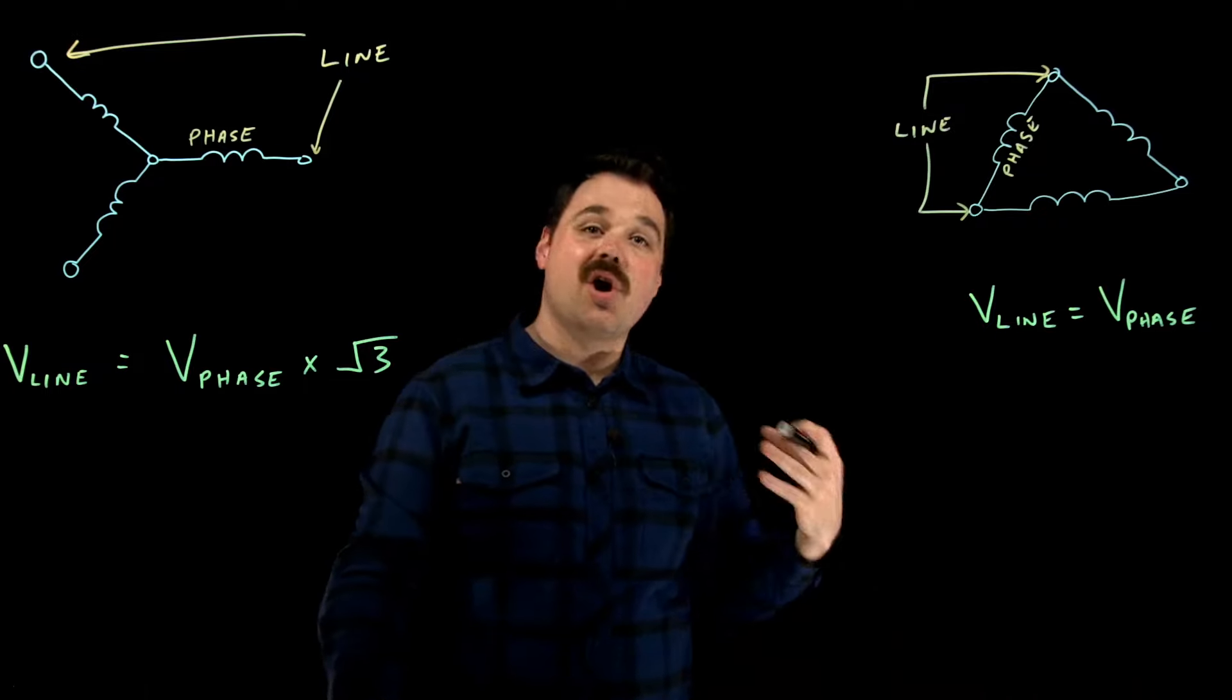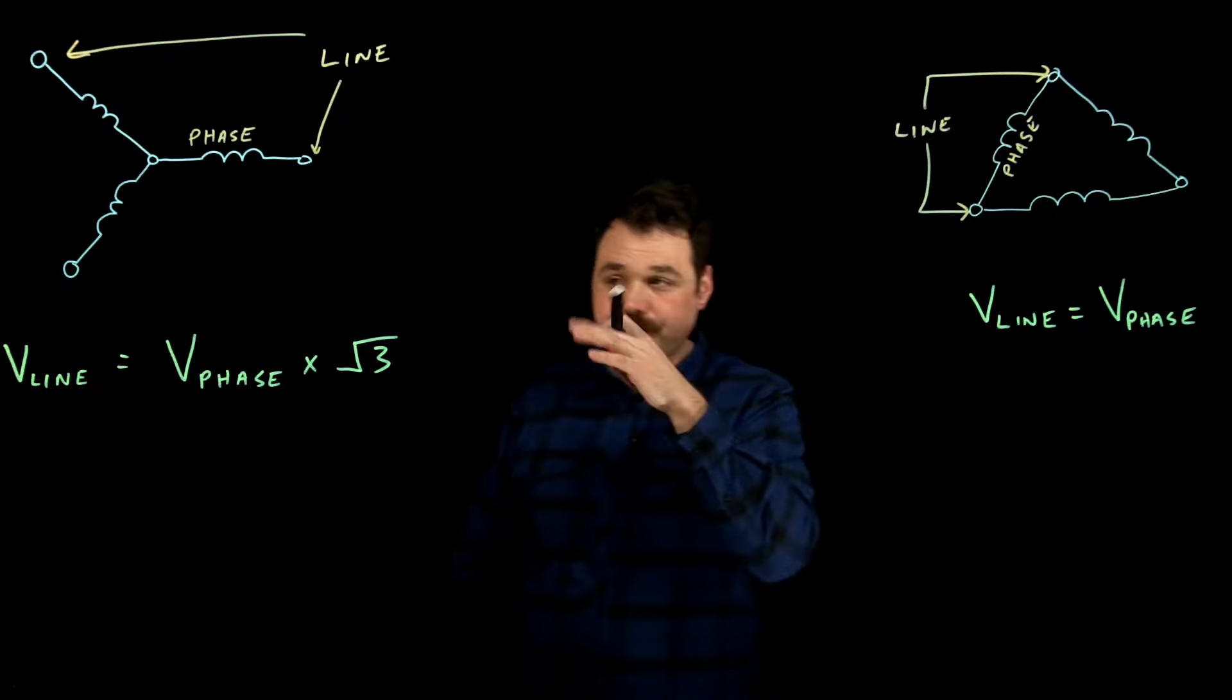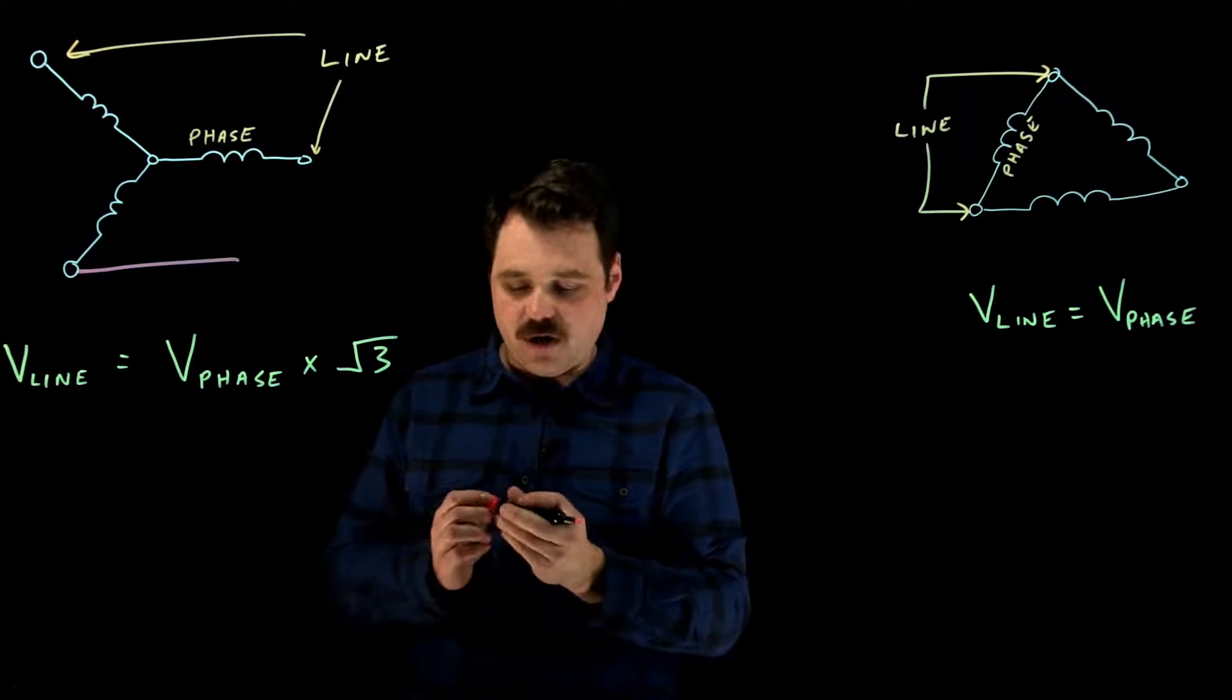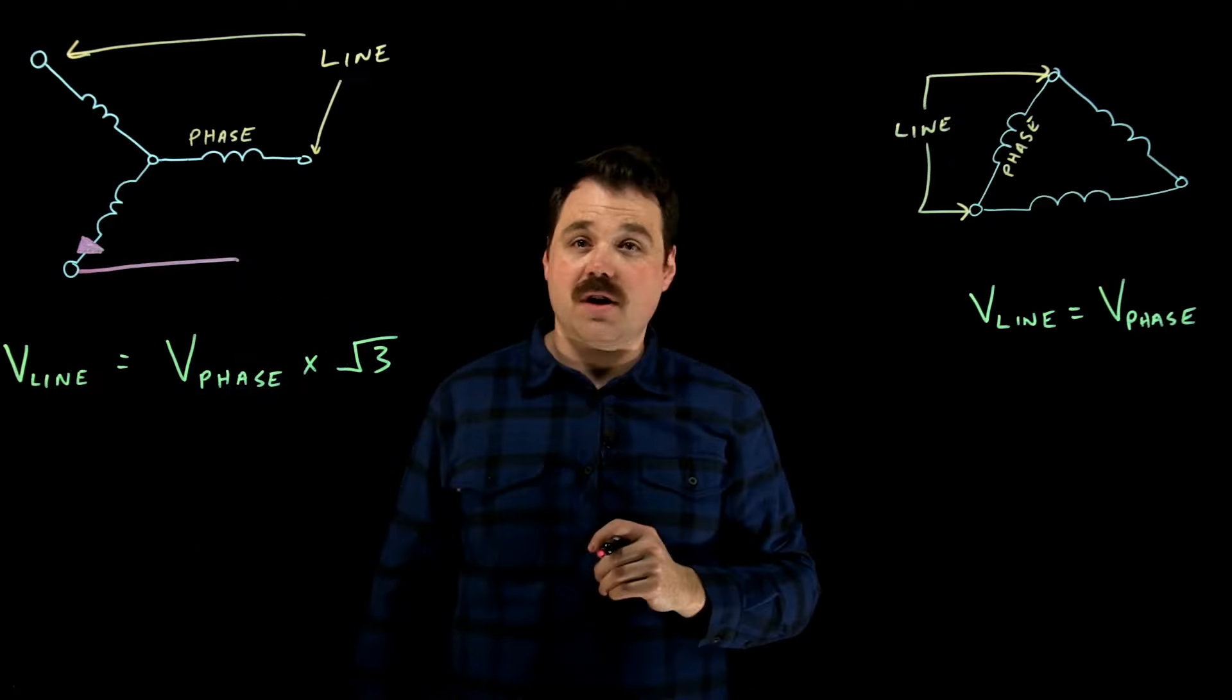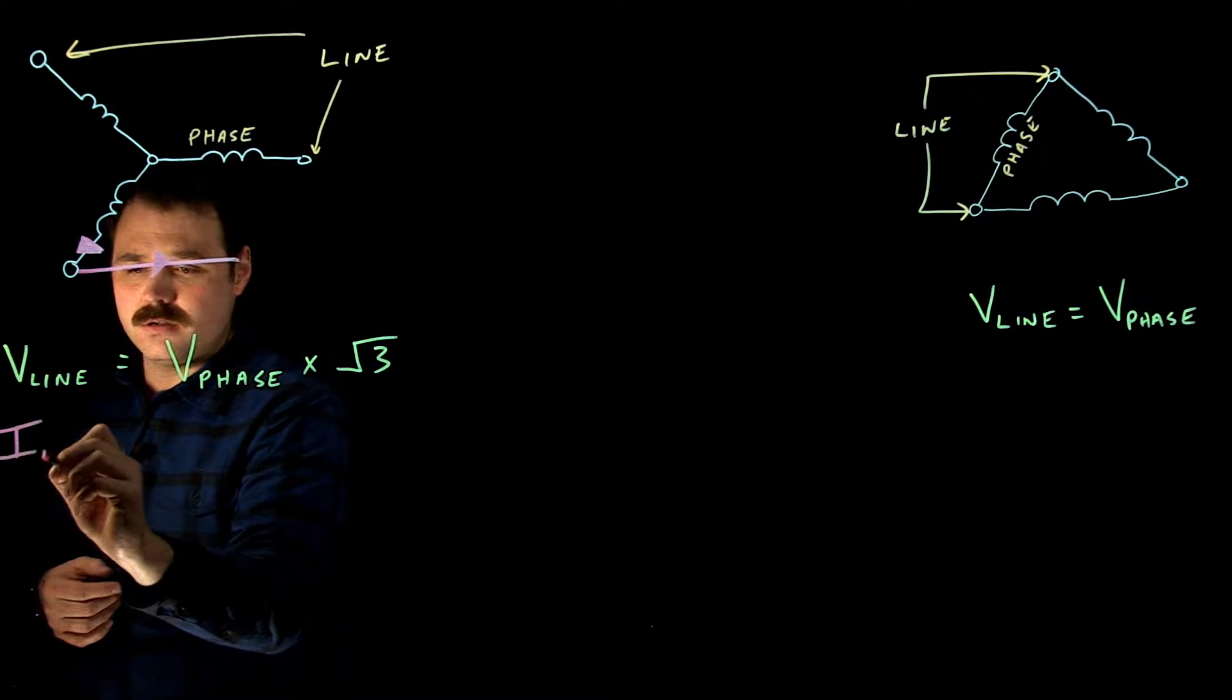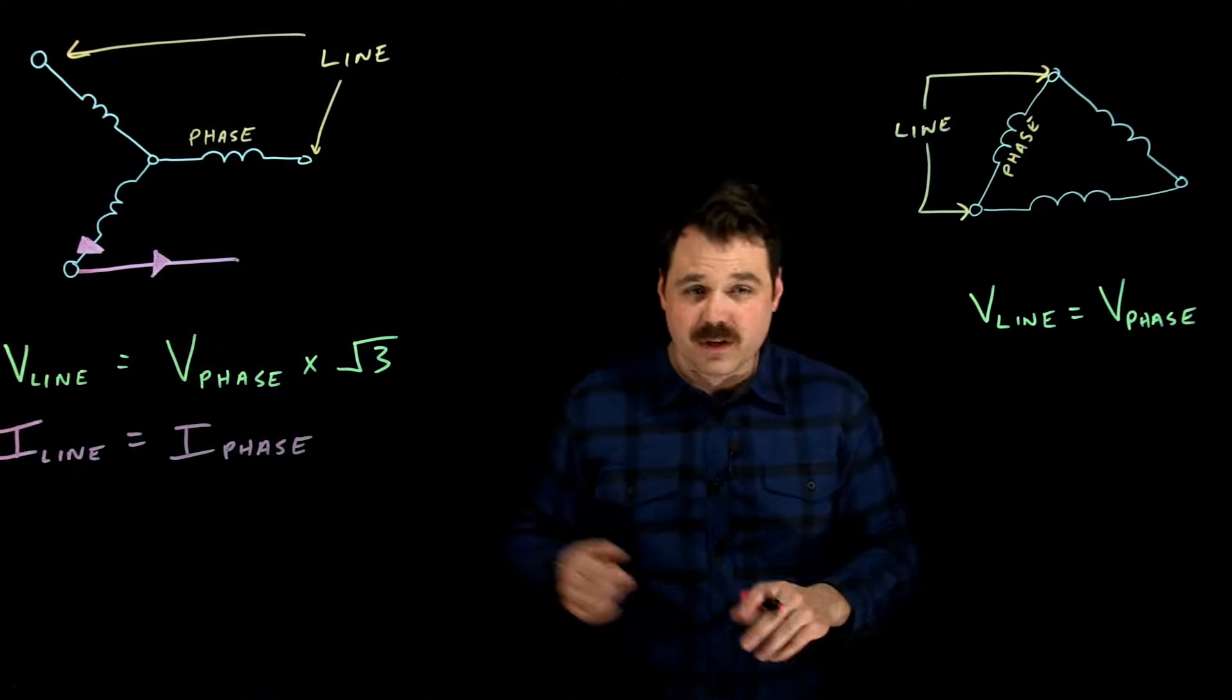Now I want to talk about current and how current flows into these circuits. Current on a Y circuit is very easy. What we say with current is that if I connect my conductor to here, let's call this my line conductor to here, whatever current is flowing here on my phase, because of Kirchhoff's current law only has one point, is also going to be flowing on my line. So what we see in a Y circuit is we say that I line equals I phase. That will be our relationship there.